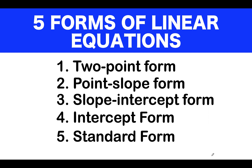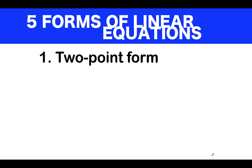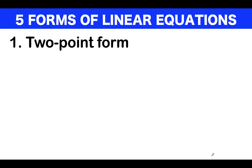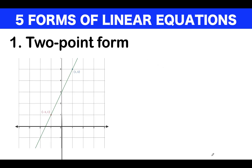We're going to derive each of these from one single line. Let's begin with a graph of a line. We have the Cartesian plane represented by two axes — one vertical, one horizontal. We draw a green line and identify two points: a blue point with coordinate (1, 5) and a red point with coordinate (-1, 1). In a plane, two points determine a line.